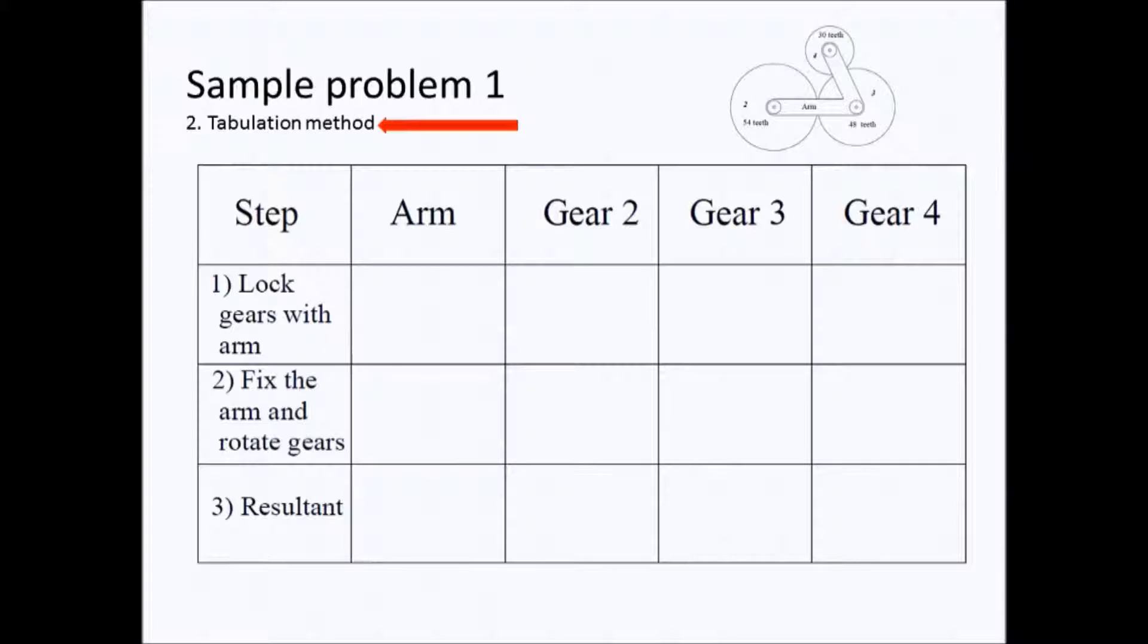We have the columns for the arm and the component gears of the epicyclic train and these are the three basic steps we have to go through: one, two, and three.